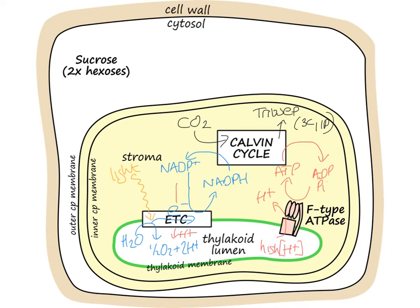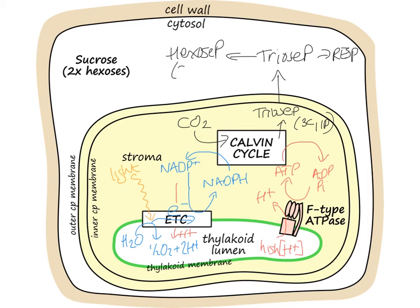There are many things that can happen to those triose phosphates. Some stay within the chloroplast to make starch, for example. But in order to make soluble sugars, those triose phosphates leave the chloroplast and go into the cytosol. At that point, they can be respired to power the cell, or they can be converted into hexose phosphates — six carbons and one phosphate. Two of those hexose phosphates can then combine, losing their phosphates, to make sucrose, which is fructose plus glucose.